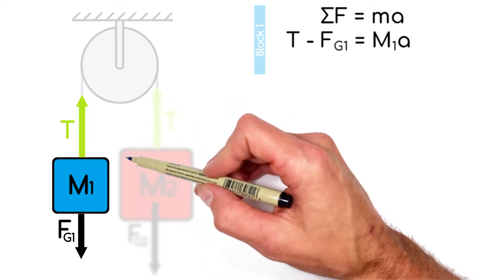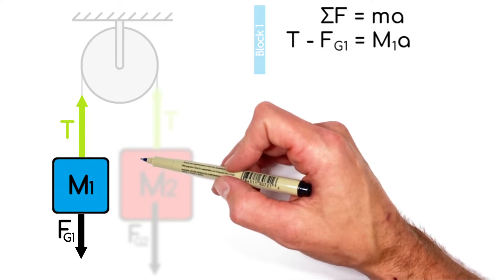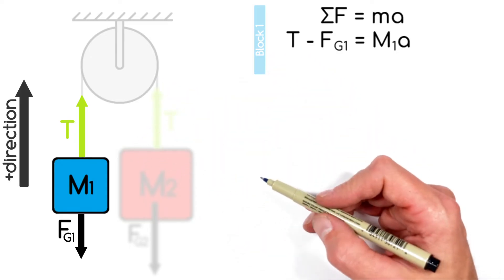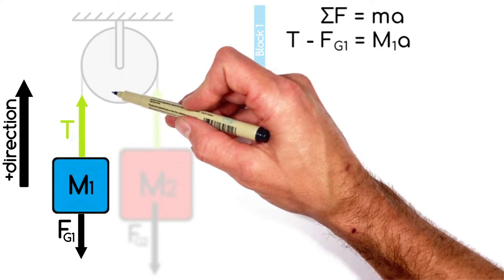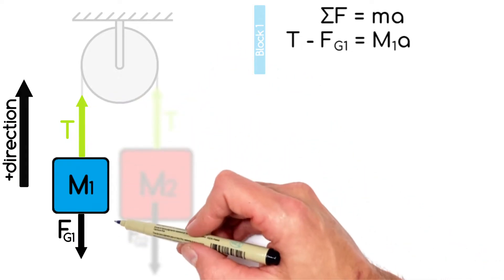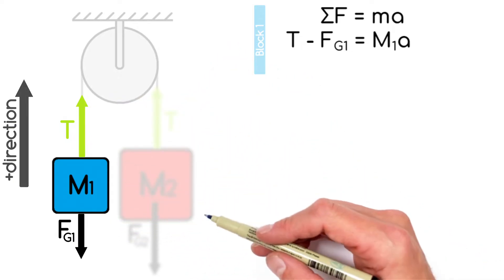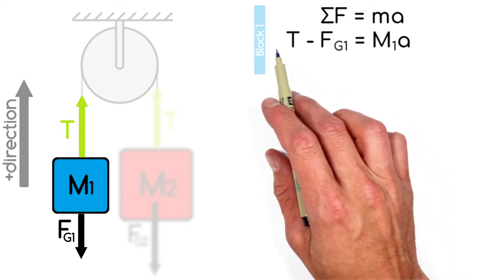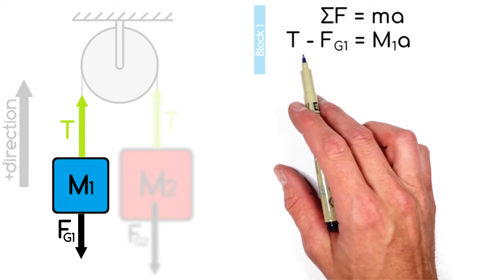So ultimately what we need to do here is establish a positive direction, which I'm going to say is up. That means the tension is in the positive direction or upward and gravity is downward or in the negative direction. So over here we'll have the tension upward minus the force by gravity downward.